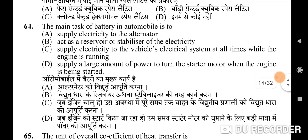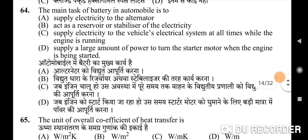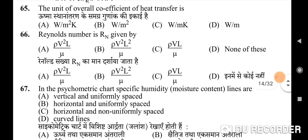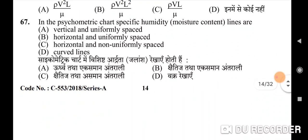Sixty-fourth question: the main task of a battery in an automobile is to — correct option is D: supply a large amount of power to turn the starter motor when the engine is being started. Sixty-fifth question: the unit of overall heat transfer coefficient — correct option is A. Sixty-sixth question: Reynolds number Rn is given by — correct option is C.